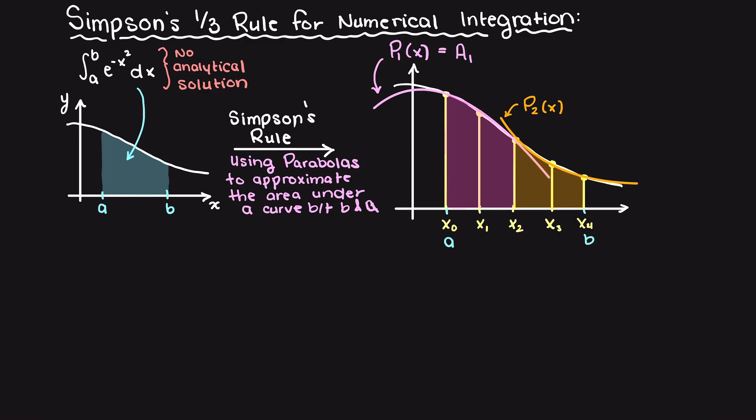Let's recall from our past numerical methods videos that parabolas are just second order polynomials, which have the general formula of ax squared plus bx plus c. So let's develop Simpson's one-third rule for numerical integration.